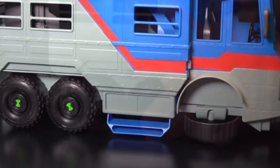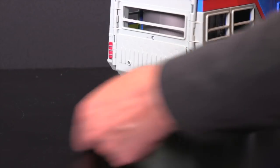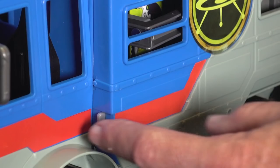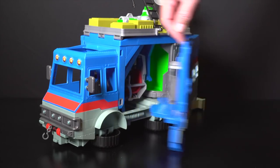To transform the Rust Bucket, start by rotating the wheels underneath the vehicle. Pull out the stabilizer. Flip the ladder up. On the door panels, slide the release button and pull open.